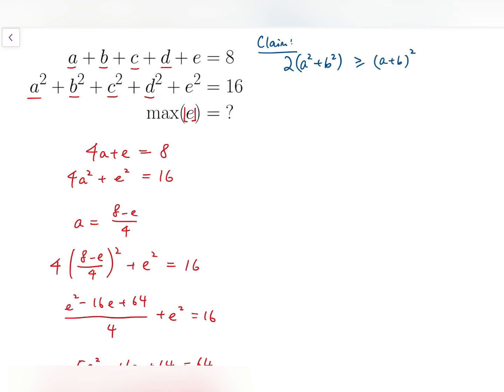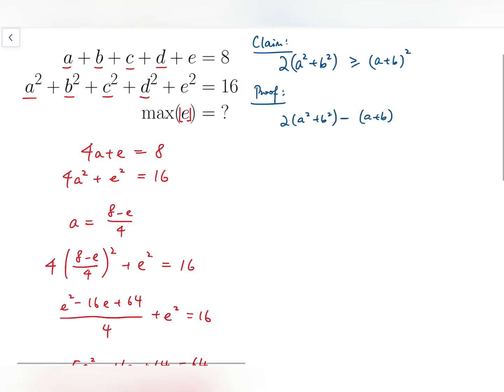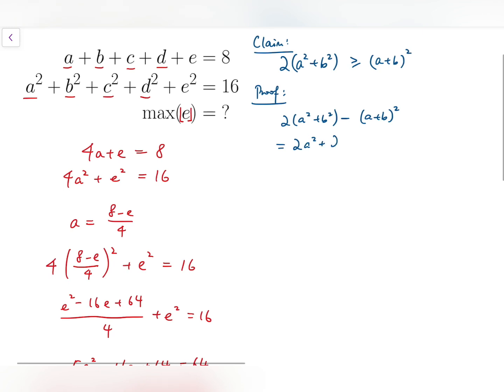And the proof for this is simply just to subtract one by the other, and you will get A minus B all squared, which is always non-negative. So you have the claim.